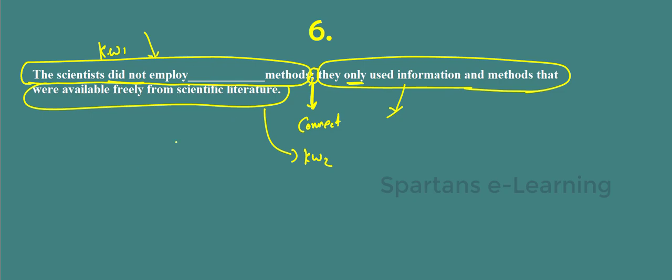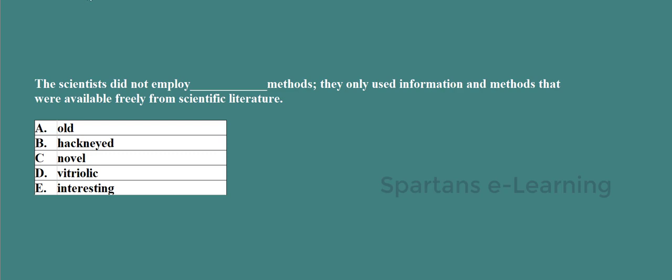This connector says the first keyword must go in line with the second keyword. The second keyword says they are using only certain information — they are not using anything new, only what is available. That can be paraphrased as: the scientists did not employ any new method. So we need a word meaning new.